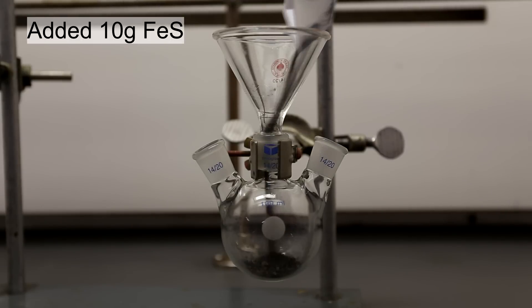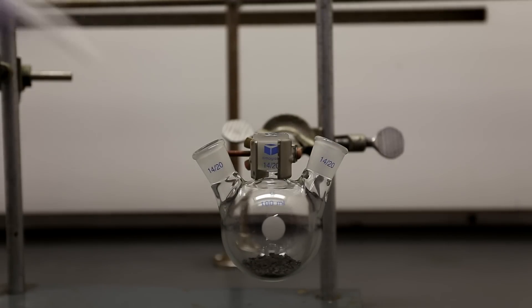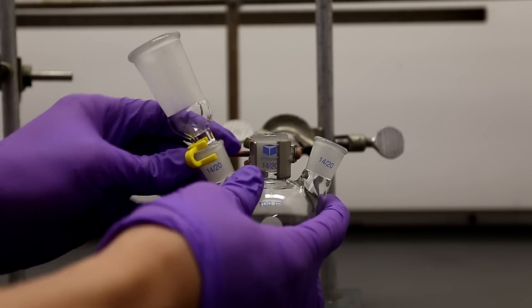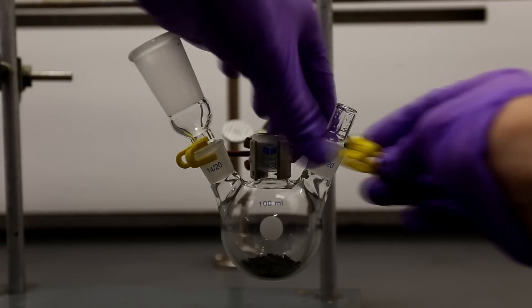10 grams of iron sulfide were added to a small three-neck round-bottom flask. One of the necks is fitted with an adapter and the other neck is stoppered.